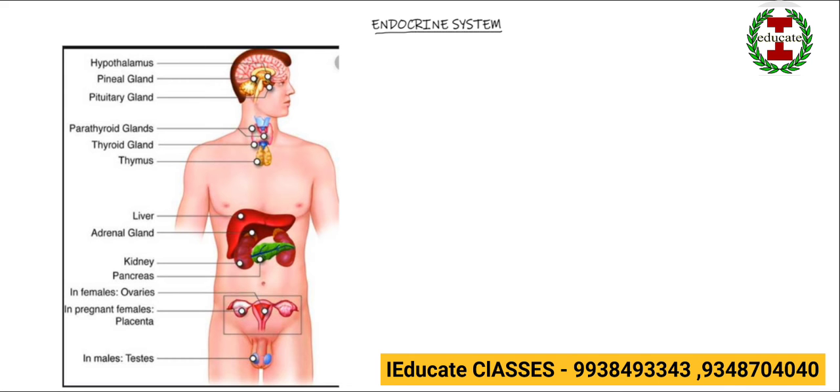So what basically is the endocrine system? The endocrine system is a system which connects various cells and tissues of the body, like the nervous system. Similar to the endocrine system, the nervous system also connects various cells and tissues of our body.